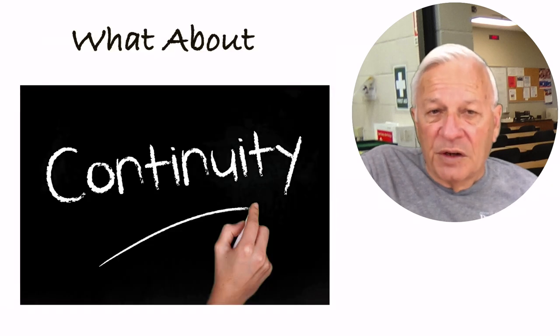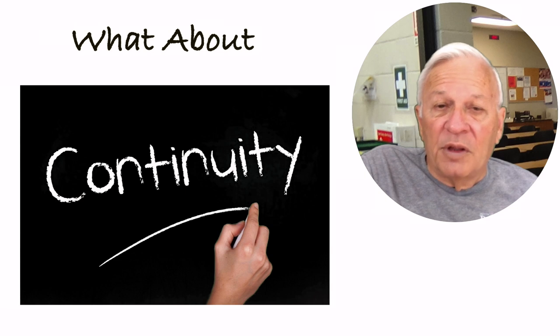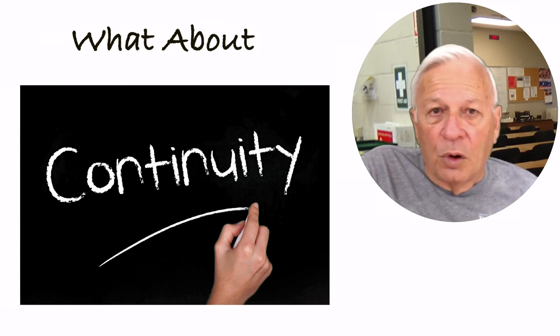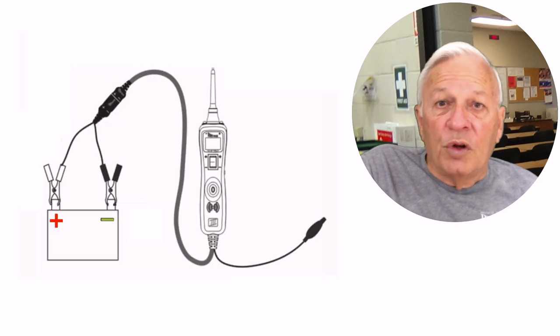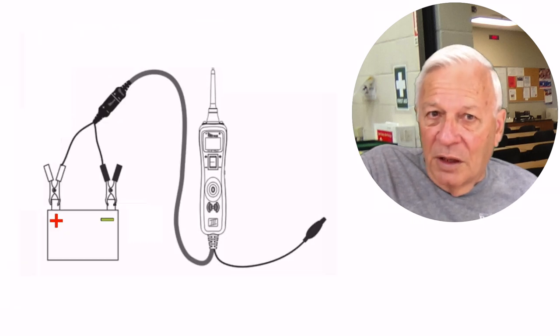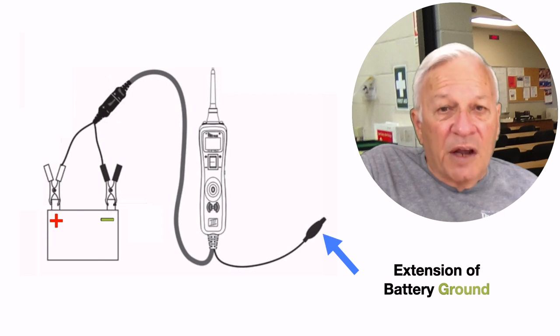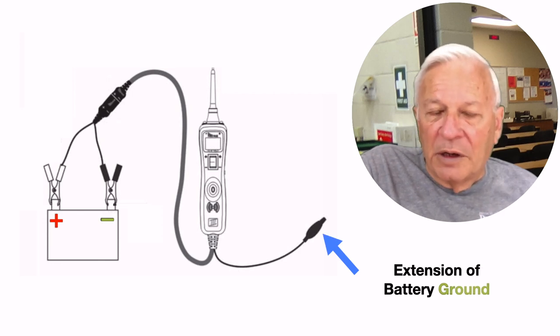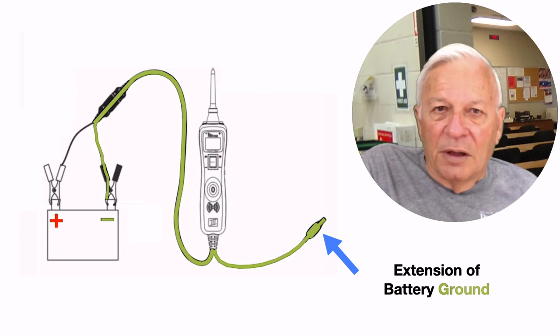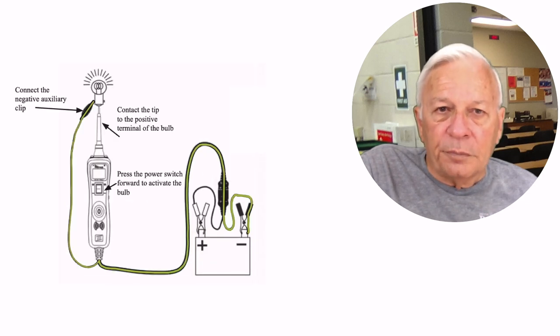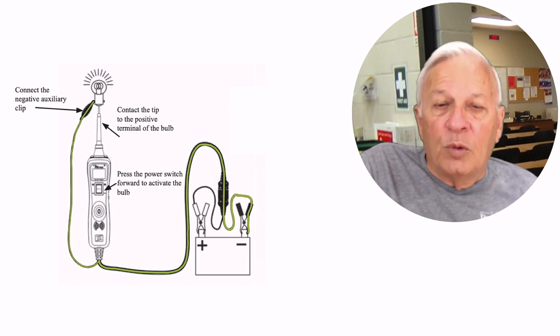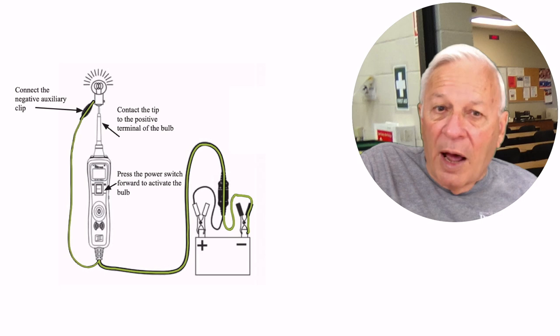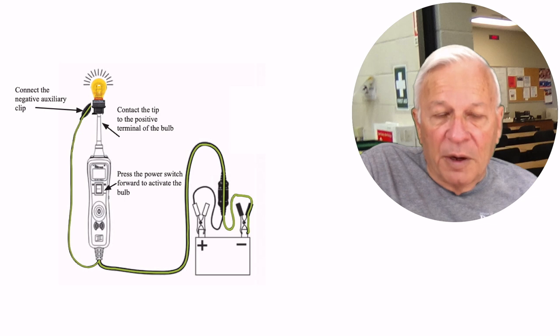Now what about continuity testing? Continuity testing is probably the most often forgot about or ignored type of testing, but with the power probe it is very simple. When you connect the power probe to a battery, this little tail wire is actually a direct extension of the battery ground. So to test a bulb, attach that ground clip to one side of the bulb. And then when you contact the tip to the positive terminal of the bulb and you press the trigger forward, you will send power to the tip and you will activate the bulb.